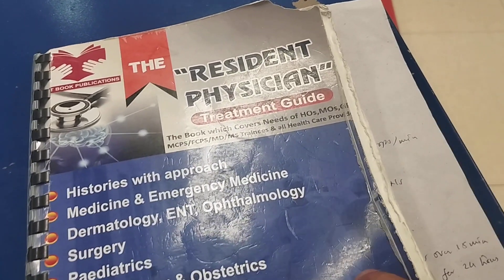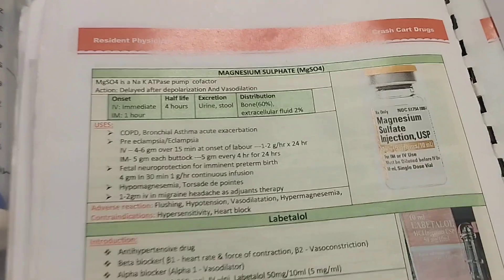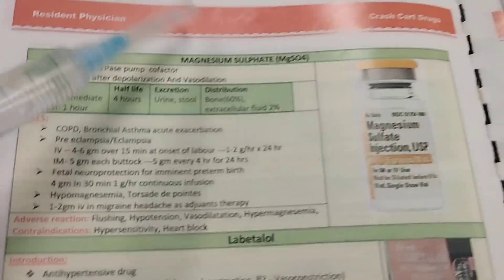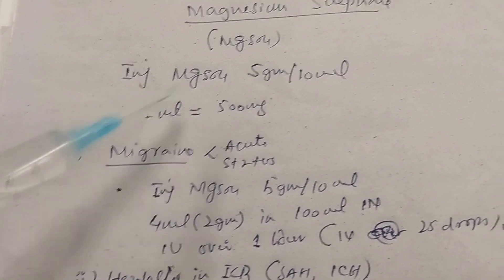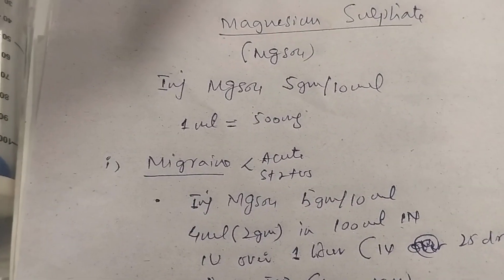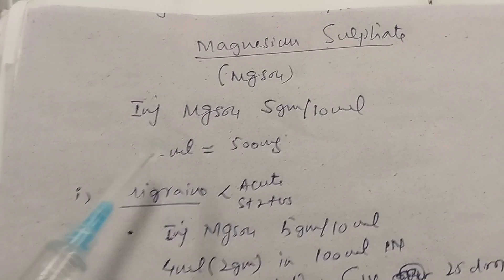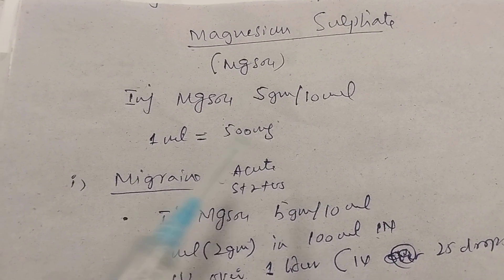Today we are going to talk about magnesium sulfate injection — the resident physician treatment guide. If we open the emergency medicine portion, this is the magnesium sulfate section. Magnesium sulfate, also written as MgSO4, comes in a 10 ml ampoule containing 5 grams, meaning 1 ml equals 500 milligrams.